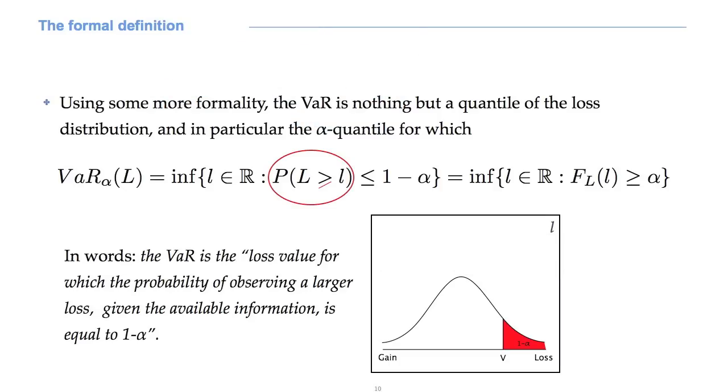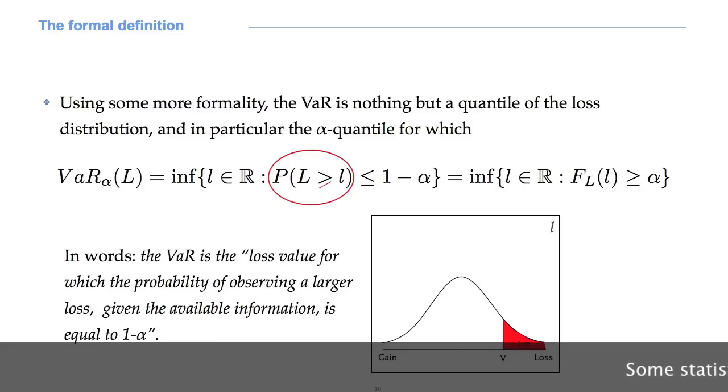The equation you can see on your screen is sometimes represented with a greater than or equal to sign. As you can imagine, this makes no difference for continuous loss distribution, as typically assumed in credit risk models. The quantity capital F is the cumulative distribution function of losses.